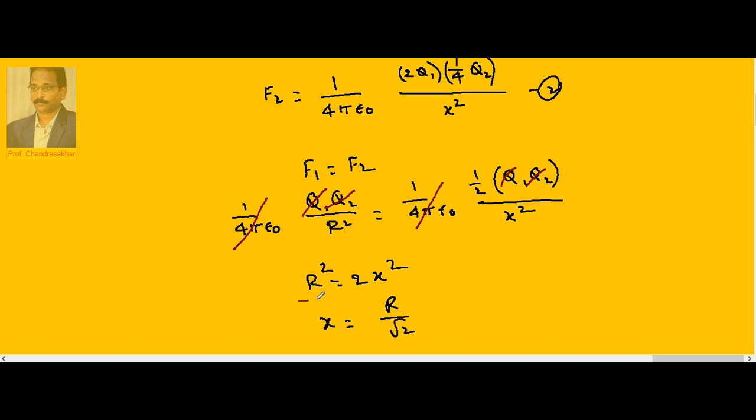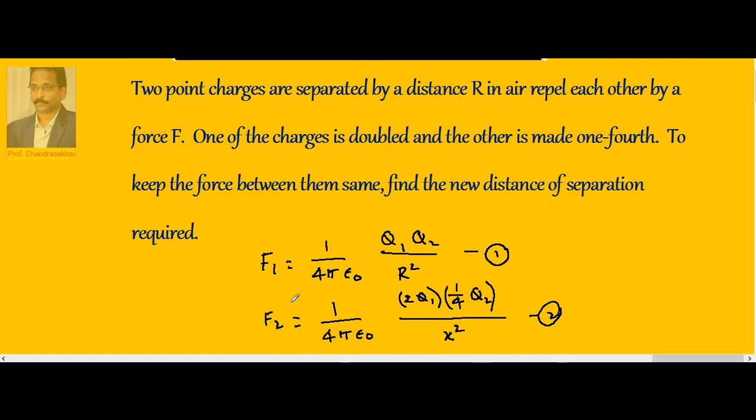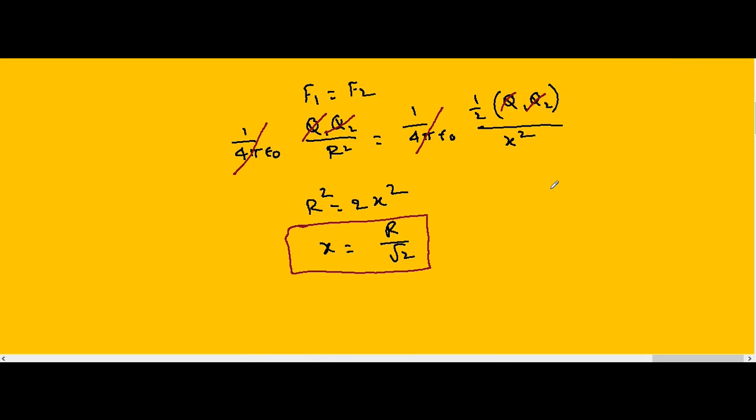The new distance of separation required between the charges, so that one is doubled, the other one is made one-fourth, and force remains same, is R by root 2.